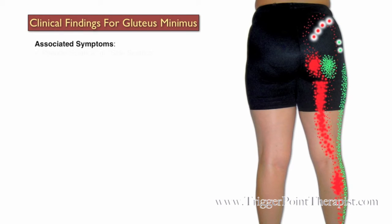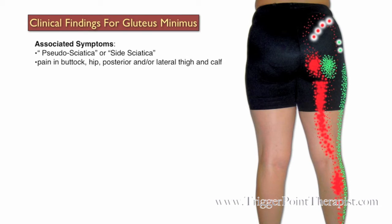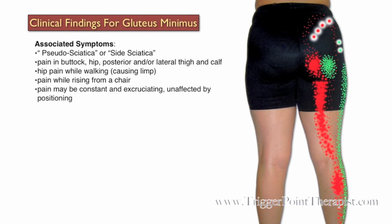Clinical findings for gluteus minimus trigger points: Dr. Travell calls this muscle the pseudosciatica or side sciatica muscle. Clients will typically complain of pain in the buttock, hip, posterior, and or lateral thigh and calf. They may also complain of hip pain while walking, which causes a limp, and pain while rising from a chair. The pain may be constant and excruciating and is unaffected by positioning, similar to that of a disc herniation.